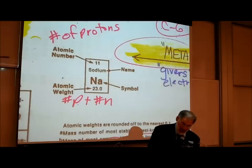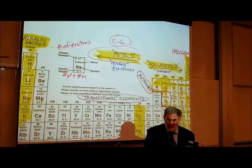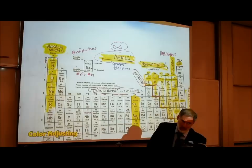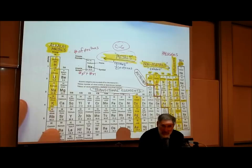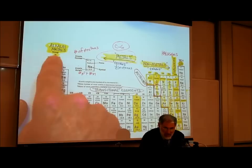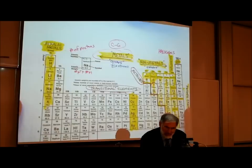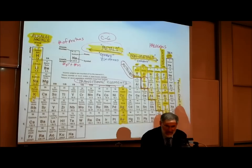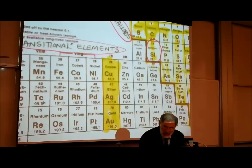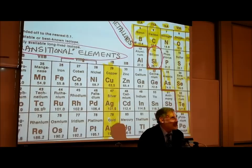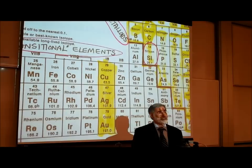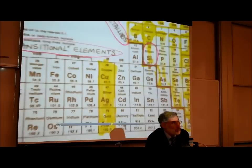The way we identify groups of elements with similar chemical properties is we usually name them based on the very top element. This could be called the hydrogen family, but it's usually called the alkali metals — and I'd like you to know that term. Alkali metals is the first column, all having one electron in their outer orbit. My personal favorite column is 1B: copper, silver, and gold — the precious metals — all having the same number of electrons in their outer orbit.